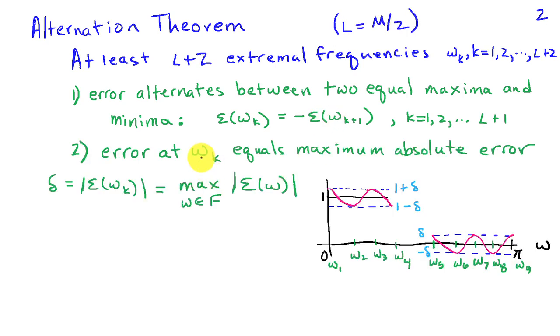And then when this property is satisfied of these extremal frequencies, then the error at those extremal frequencies equals the maximum absolute error, which we're going to label here as delta. So that's the magnitude of epsilon of omega K. And that's the maximum over all the frequencies that we're considering in our design set, F.